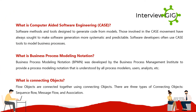What is computer-aided software engineering (CASE)? CASE refers to software methods and tools designed to generate code from models. Software developers often use CASE tools to model business processes. What is business process modeling notation (BPMN)? BPMN was developed by the Business Process Management Institute to provide a process modeling notation understood by all process modelers, users, and analysts. There are three types of connecting objects: sequence flow, message flow, and association.